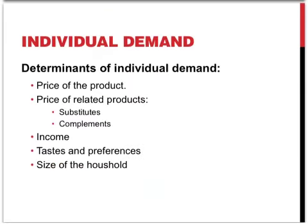In the previous section we looked at the relationship between the price of the product and the quantity demanded, and drew an individual demand curve from a demand schedule. In this section we'll be having a closer look at the other determinants of individual demand. This includes the price of related products, income, tastes and preferences, and the size of households. Then we'll move on to market demand.